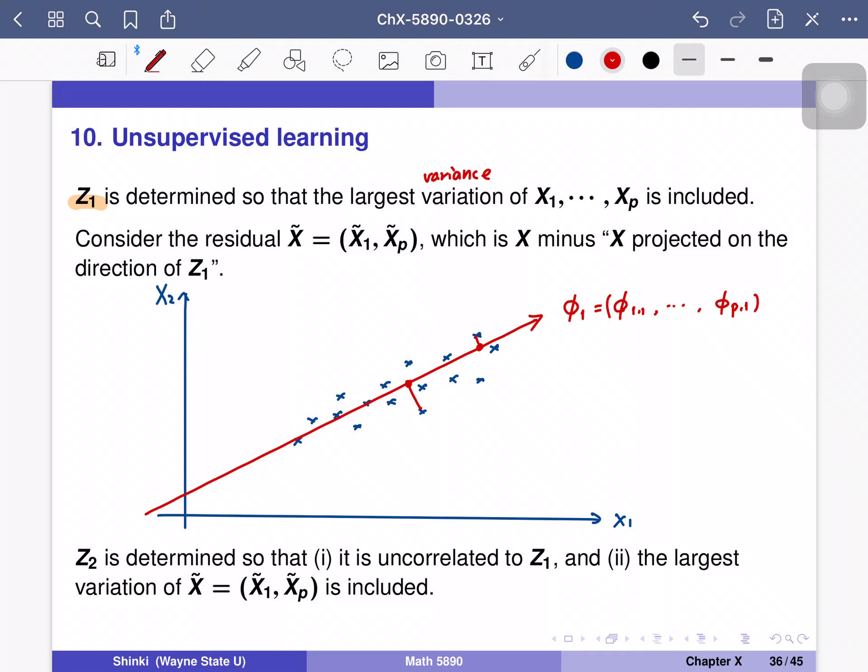So now we want to discuss how to determine z2. At first, we consider residual of z1. So that means for each data point we have residual here. So we think about these vectors. And then we determine z2 so that it is uncorrelated to z1, and the largest variance of this residual is achieved by choosing best coefficients.